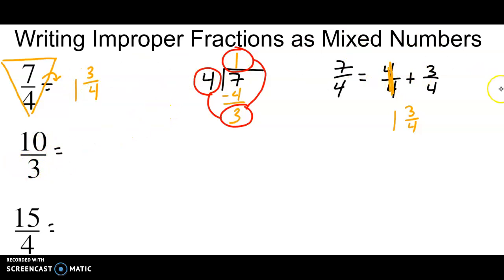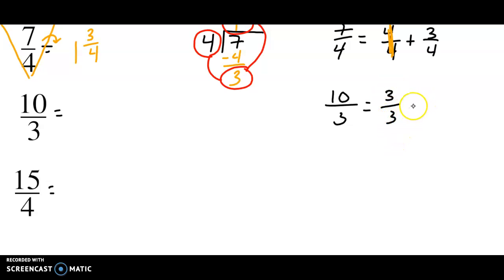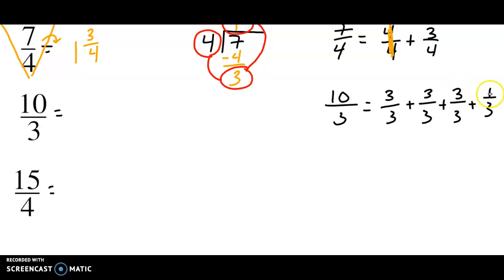Let's look at ten thirds. Ten thirds is equivalent to three thirds — which makes a whole — plus another three thirds, that's six, plus another three thirds, that's nine. How many more to get to ten? One more third gives me ten. Three thirds is one, three thirds is one, three thirds is one. So I have one, two, three, and one third. Ten thirds is the same as three and one third.